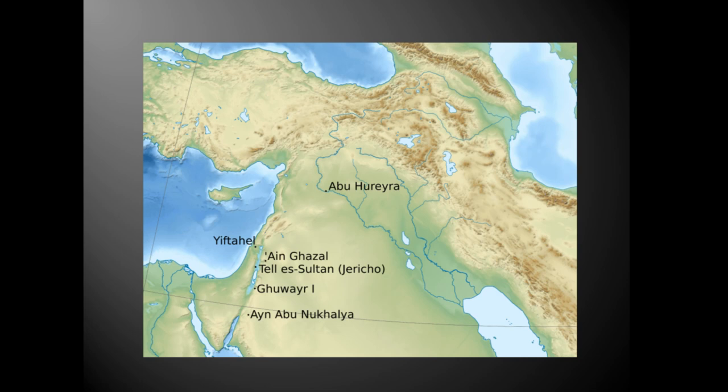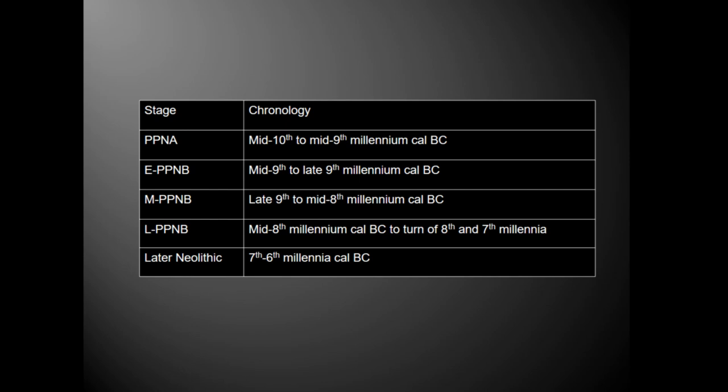This is southwest Asia — those are the sites we'll be looking at. In terms of time, we're sitting between the 10th and the 6th millennium cal BC, with most of the Neolithic in between. It begins in the PPNA — pre-pottery Neolithic A — hunter-gatherers who built substantial stone structures. Cultivation of wild plants and possibly domesticated plants begins with the early PPNB, and domesticated animals start figuring heavily in meat economies in the late PPNB.